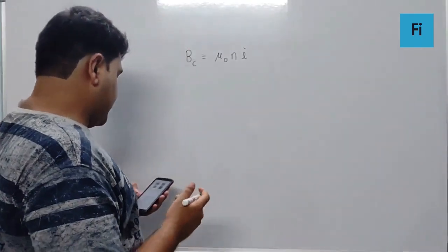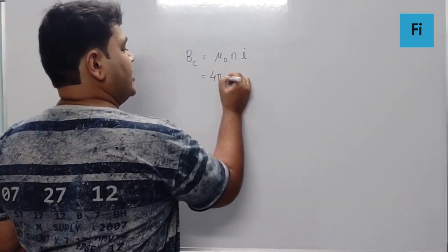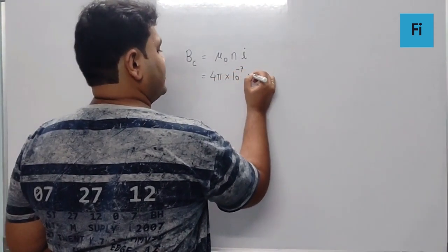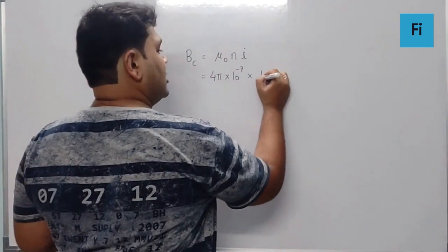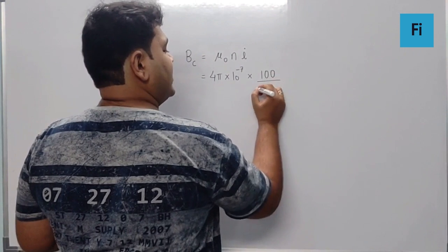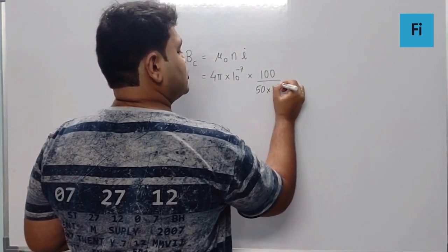As per the data, we know μ₀ as 4π × 10⁻⁷. The number of turns per unit length is going to be 100 upon 50 centimeters, so 50 × 10⁻².